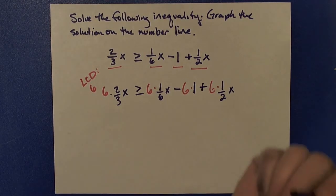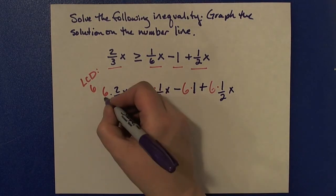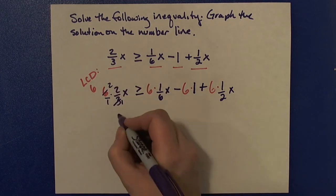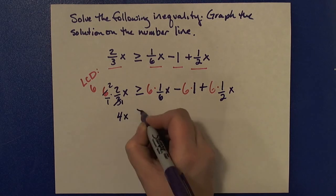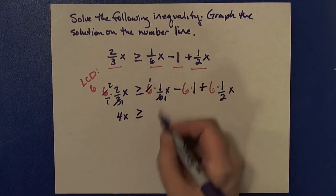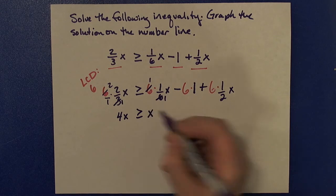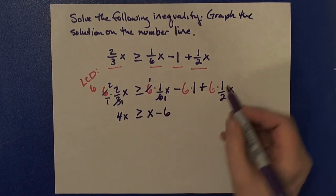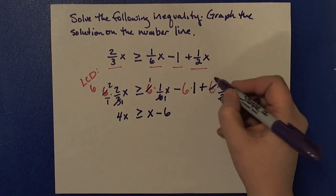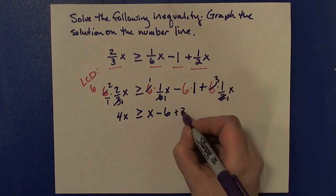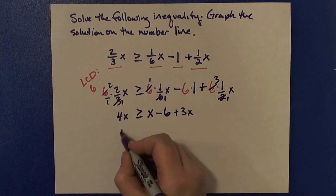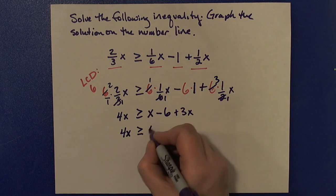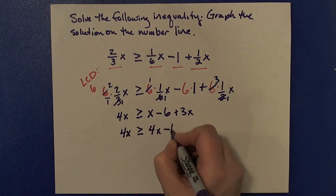And now I'm going to go ahead and do some canceling to clear out the denominators. When I do some canceling here, I'll end up with 4x. And here, I'll end up with just 1x, 6 times 1. And here, some canceling, and I'll end up with 3x. So now I have 4x on the left is greater than or equal to x plus 3x is 4x minus 6.